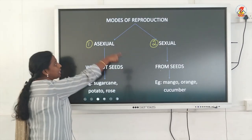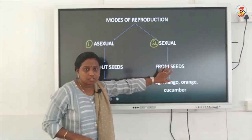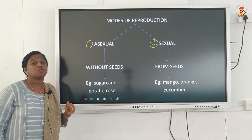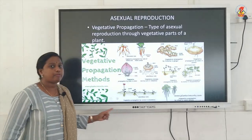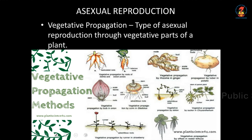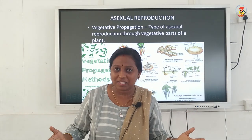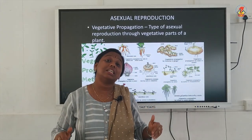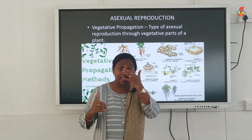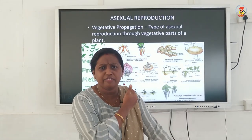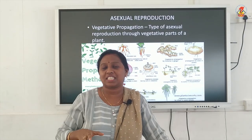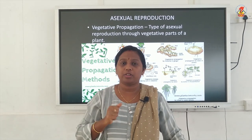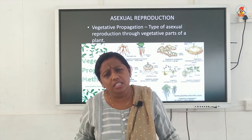Today we will study about asexual reproduction in plants. Vegetative propagation is a type of asexual reproduction where you can develop a new plant from the vegetative parts of a plant. Other than the flower, all other parts — root, stem, leaf, etc. — are vegetative parts. So if you are developing a new plant from a root, a stem, or a leaf, you call it vegetative propagation.